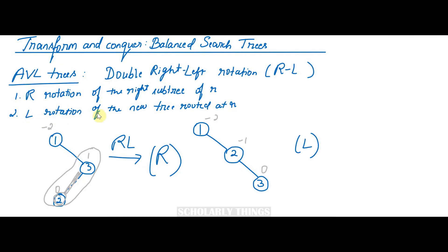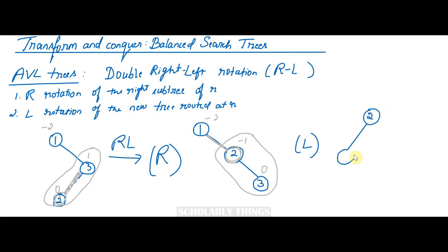Step two of RL rotation: perform left rotation of the new tree rooted at R (node 1). We consider the edge connecting root node 1 and its right child 2 and rotate to the left. Node 2 becomes the root, node 1 goes to the left, node 3 is to the right. Balance factors are all 0. After performing RL rotation, the AVL tree is now balanced.